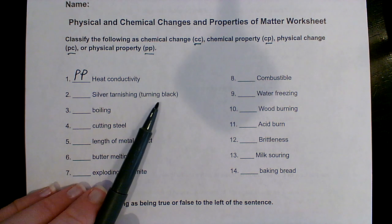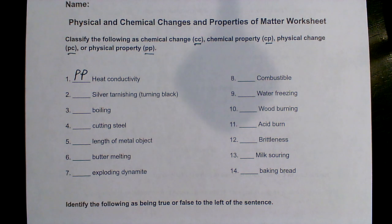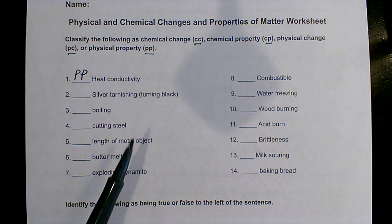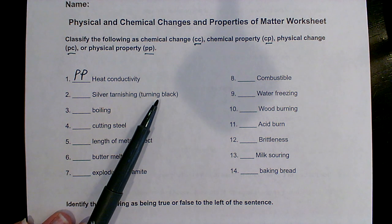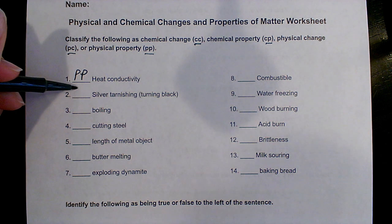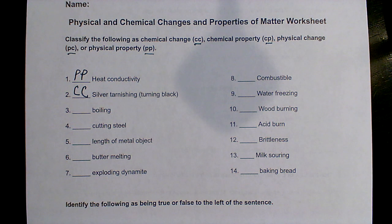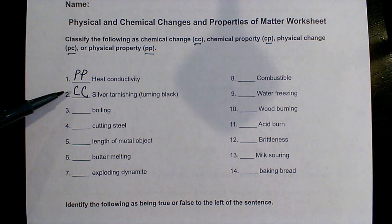Silver tarnishing — turning black. In the notes we had five clues that there was a chemical reaction taking place, and one of them is a color change. That black stuff that forms on silver is actually silver's version of rust. So that would be a chemical change. The substance is not silver; it is something that formed from silver and oxygen if you let that silver sit out.